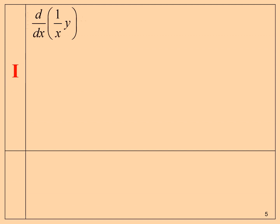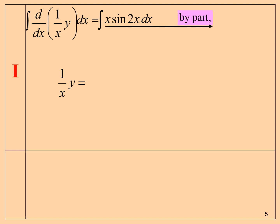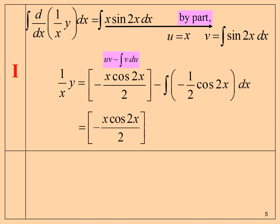Integrate both sides. We must note that to integrate x sine 2x dx, we must use integration by parts, where u is x and v equals the integral of sine 2x dx. Using the by parts formula, u times v minus the integral of v du, we get negative x cos 2x over 2 plus one half times sine 2x over 2 plus c.